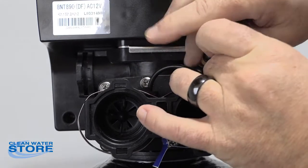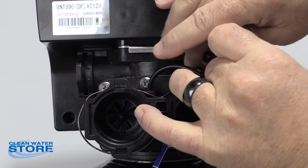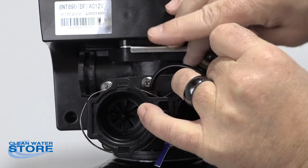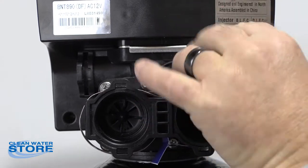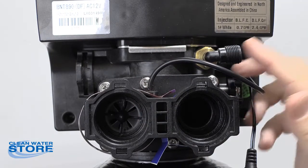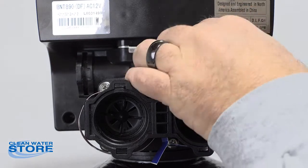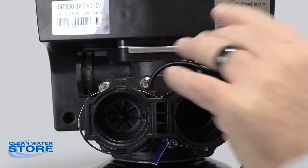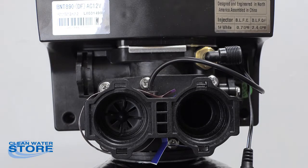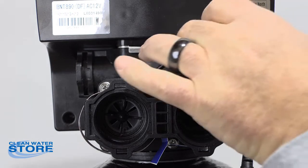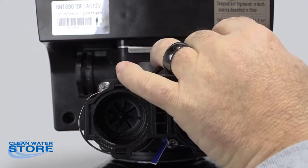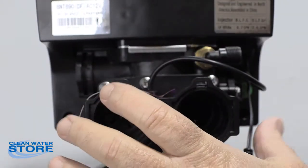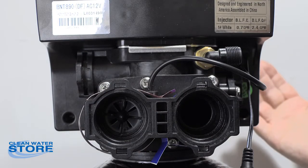Once you've done that, go ahead and advance the valve to the first regen cycle, which is the brine draw. When you do that, you should feel a vacuum here. If you don't feel a vacuum being pulled here while you're in that first regen step, go ahead and connect your brine line back up.